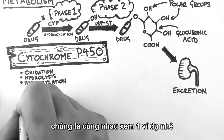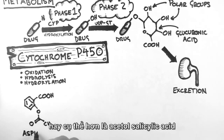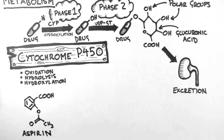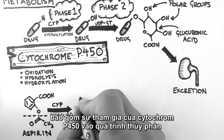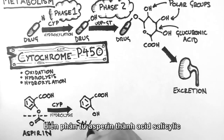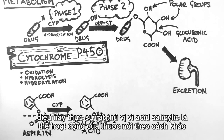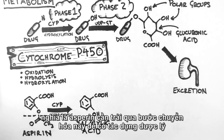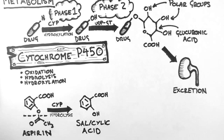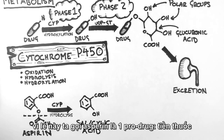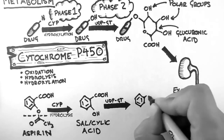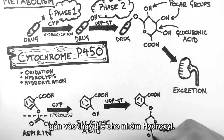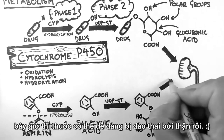Let's have a look at an example. This molecule here is aspirin, or more correctly, acetylsalicylic acid. The phase 1 metabolism of aspirin involves a cytochrome P450 hydrolysing the aspirin molecule, and the resultant product is salicylic acid. This is particularly interesting as salicylic acid is the active drug. In other words, aspirin needs to be metabolized before it has any effect. Because of this, we call aspirin a prodrug. Salicylic acid can then be acted upon by UDP-glucuronosyltransferase to attach the glucuronic acid group in place of the hydroxyl group. Now the product can easily be excreted by the kidneys.